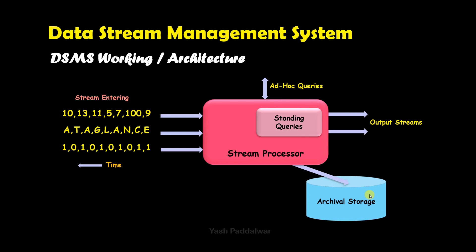Next is the archival storage, which comes out of the stream processor. Whatever stream enters the stream processor is stored in the archival storage. Note that not all streams will be stored — it depends on the configurations and specifications of the system the user is using. This archival storage is very massive, and no other operations can be performed on it other than just storing the incoming streams.